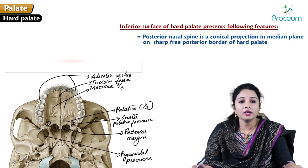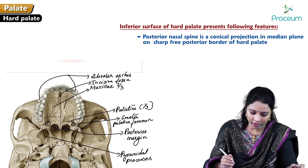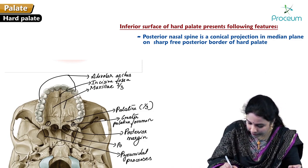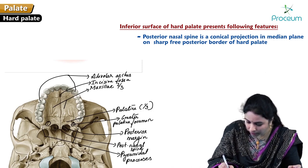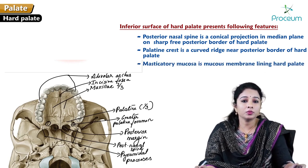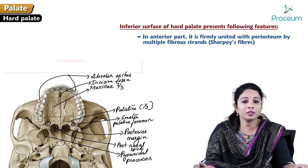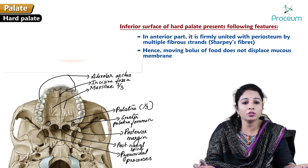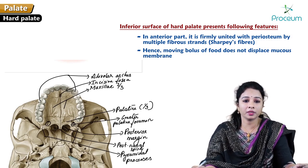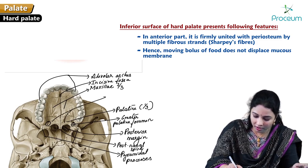The posterior nasal spine is a conical projection in the median plane on the sharp free border of the posterior border of the hard palate. The palatine crest is a curved ridge near the posterior border of the hard palate.